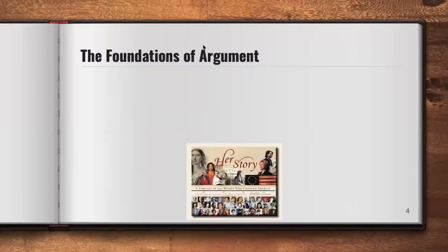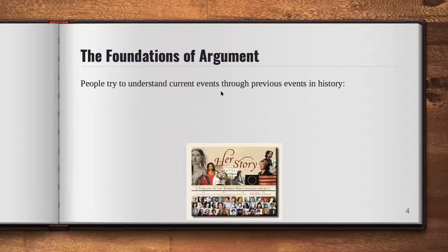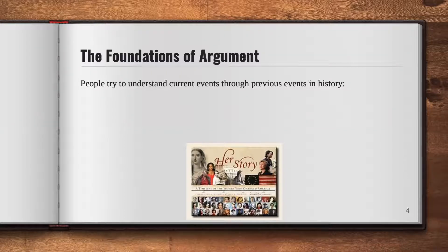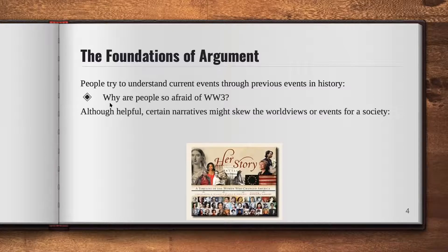Next, we're going to move on to history. One of the things we tend to do as humans is understand what happens next based on history. We tend to compare what's happening now to something that happened in the past — we live by the idea that history repeats itself. So we look at the past to make sense of current events. That brings me to my first question: why do you think people are so afraid of a World War III? People have been talking about a possible World War III in the next few years — nuclear war with all the technology we have now.